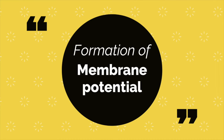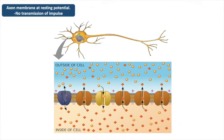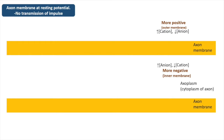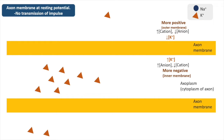In a neuron, ions are unequally distributed between the interior of the cell and the surrounding fluid. As a result, the inside of a cell is negatively charged relative to the outside. This charge difference or voltage across the plasma membrane is called the membrane potential. The inside of the axon is more negative due to the anions that are more concentrated inside of the axon and more potassium ions at the inner membrane.